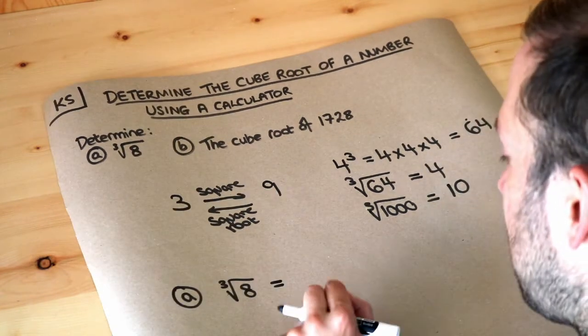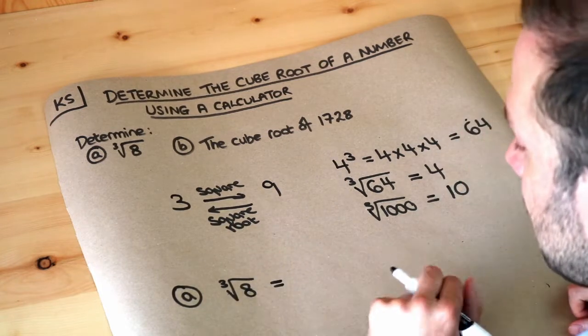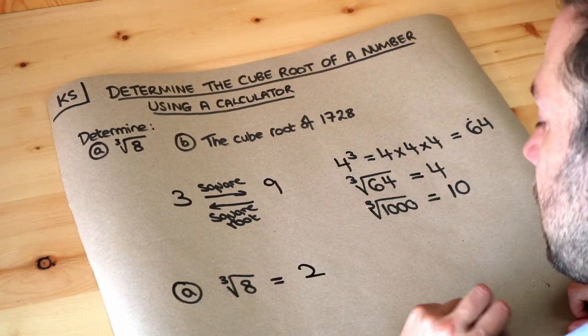You just need to ask yourself: what number cubed gives you 8? Well, it's 2. 2 cubed is 8. 2 times 2 times 2 is 8, so the answer is 2.